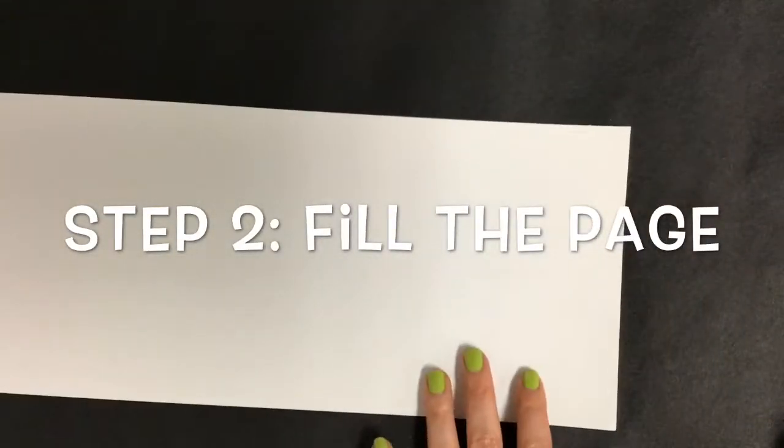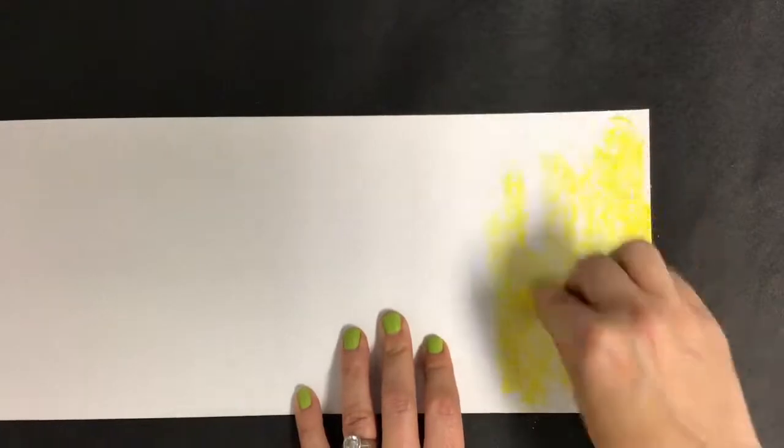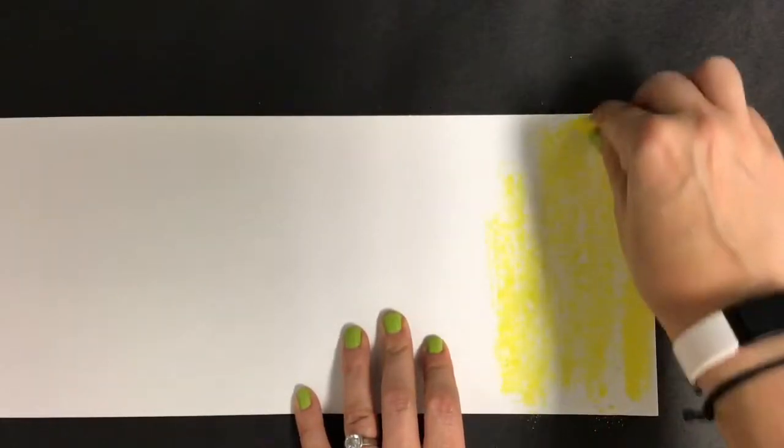Step number two for a chalk background is to color the entire background with chalk. Make sure to fill every single space on your page, not leaving any white or blank areas.